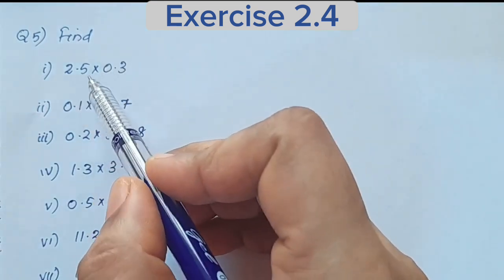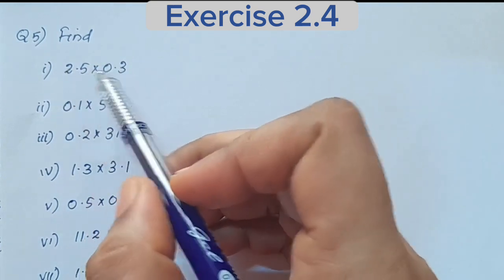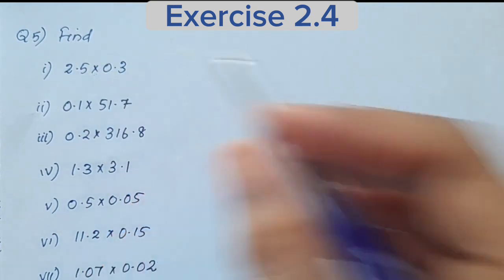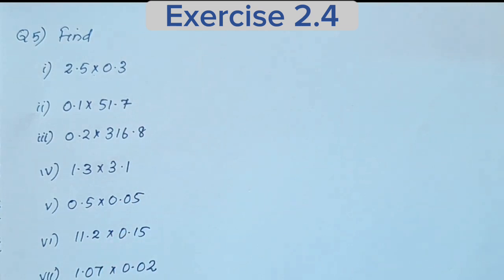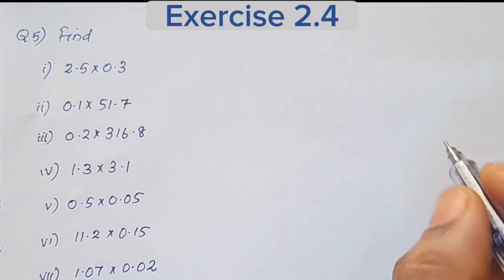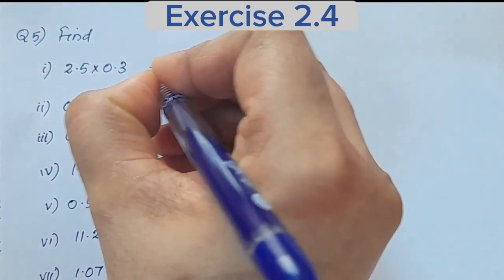5th question: find 2.5 into 0.3. This is the multiplication of two decimal numbers. When we multiply decimal numbers, we first multiply the whole numbers. So 2.5 into 0.3 — first we take 25.